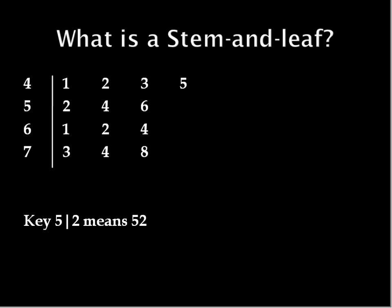A stem and leaf plot will usually come with a key like this that tells us 5 on the left side and 2 on the right side means 52. In other words, the numbers on the left side represent tens and the number on the right side represent ones. So this row is 41, 42,